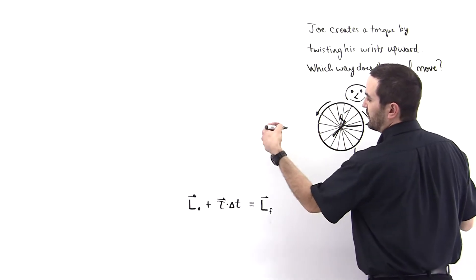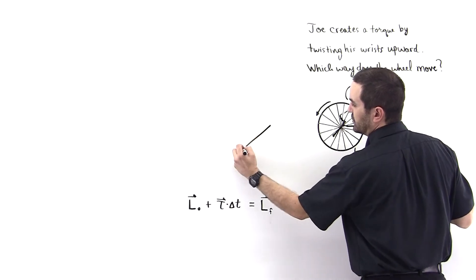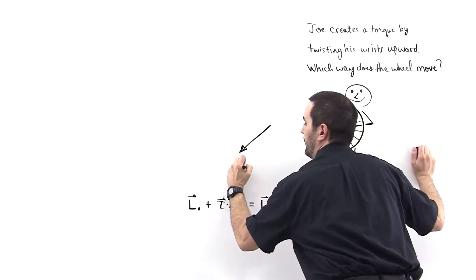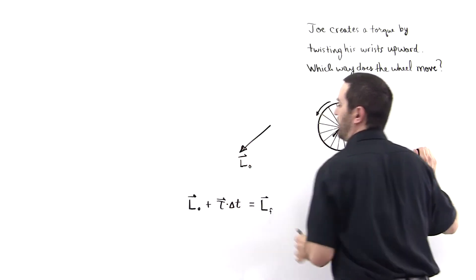So let's draw a vector diagram over here to the right—to Joe's right, that is—like this. And so this is L naught.